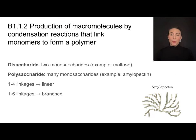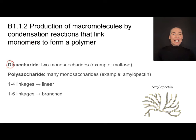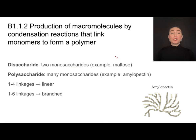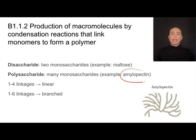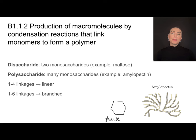Mono means one, so a monosaccharide is a simple sugar. A disaccharide — di means two — is two monosaccharides bonded together. A great example is maltose, which is made of two glucose molecules bonded together. Poly means many, saccharide meaning sugar, so a polysaccharide is many monosaccharides linked together. A great example is amylopectin, one of the forms of starch, which is made of monomers of glucose.